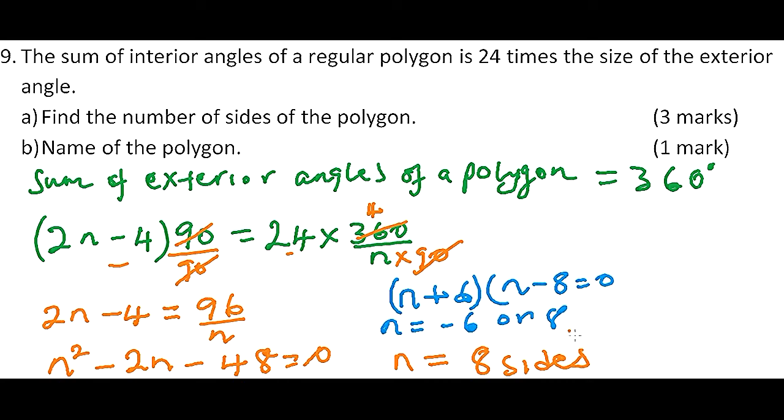So up to there you get 3 marks. From there, you are told to name the polygon, and that's 1 mark. The polygon with 8 sides is an octagon.